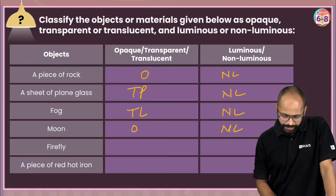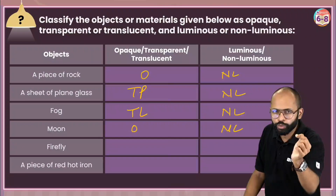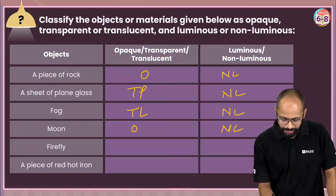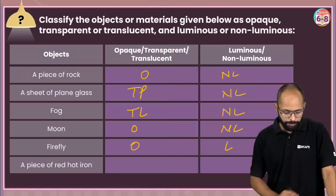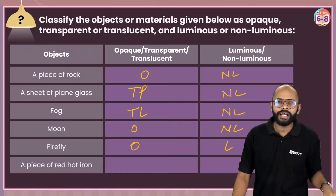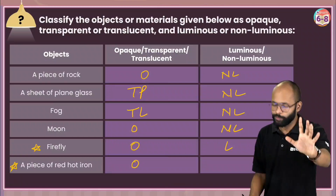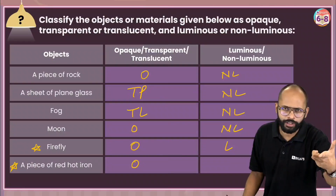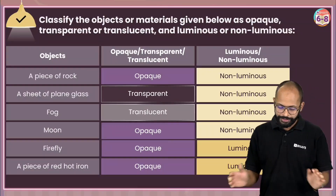Firefly — it is luminous because it gives its own light. But is it opaque, transparent, or translucent? Don't be confused — can you see through a firefly? No. So it is an opaque object, but luminous. A piece of red-hot iron — it is glowing, but can you see through it? No. So it is opaque. Is it luminous? Yes, luminous. These two are the tricky ones.